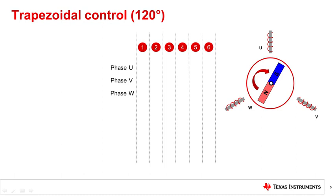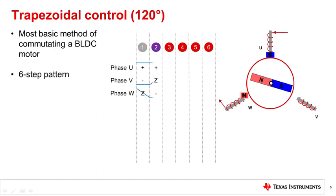Let's begin with 120 degree trapezoidal commutation. This is the most basic method of brushless DC motor commutation. By driving current through the windings of the stator, magnetic fields are induced on the permanent magnet rotor to apply force. By energizing the windings in a six-step pattern, the motor will begin to spin.